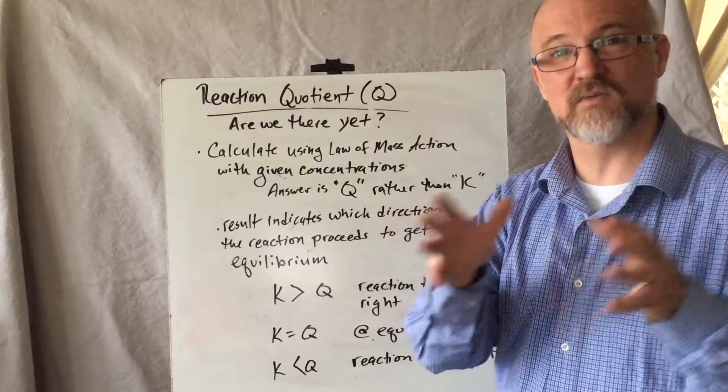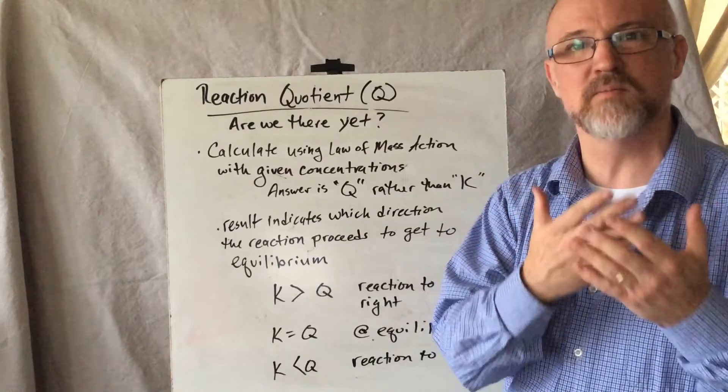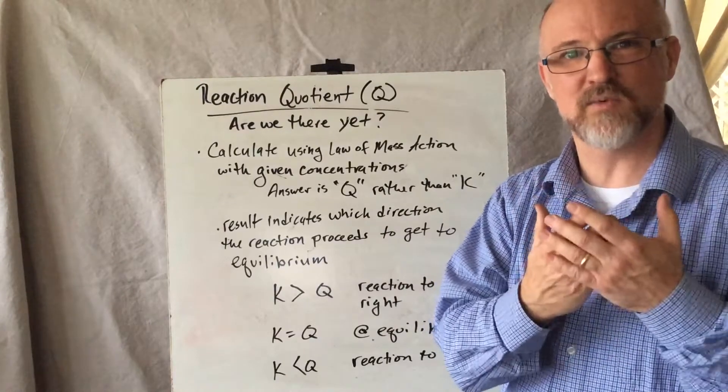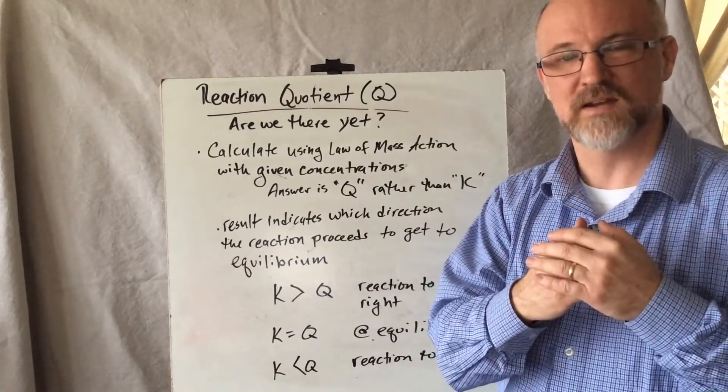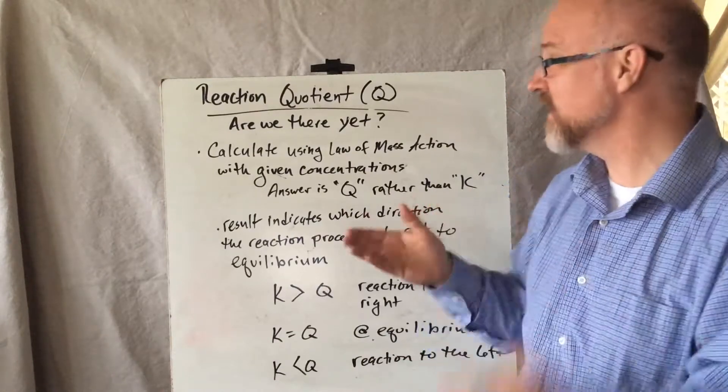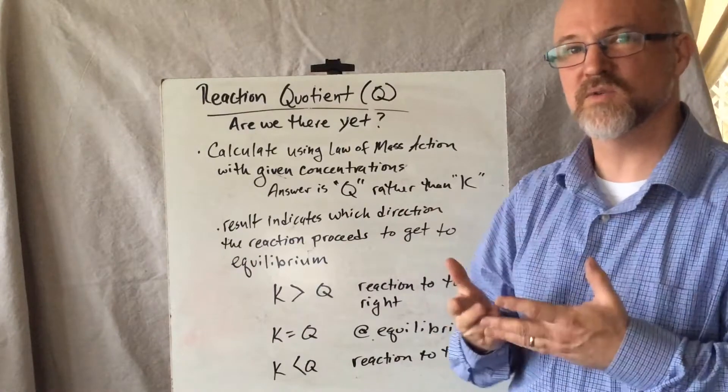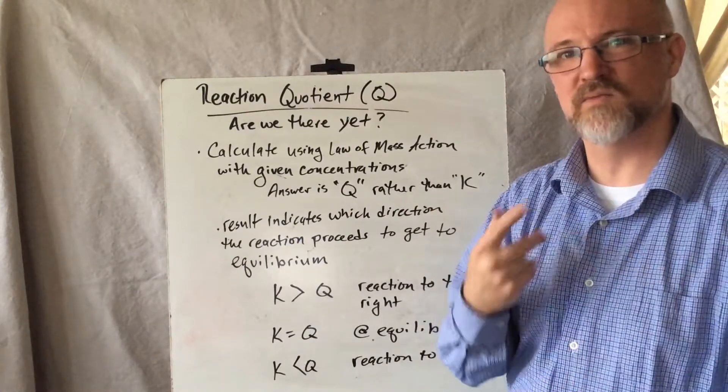But then we're taking that answer, and what we need to already have in our back pocket is what is the equilibrium value, what is the equilibrium quotient. And if we know that, we can compare what we get, which we call Q, the reaction quotient, to the equilibrium constant, which is K.